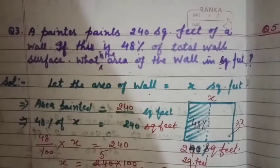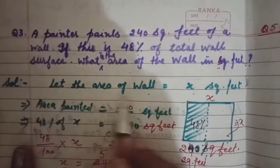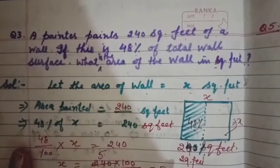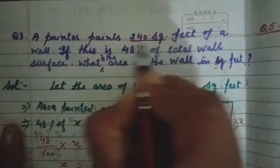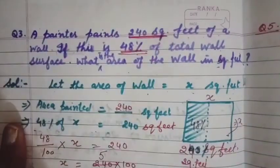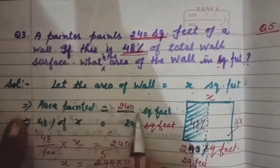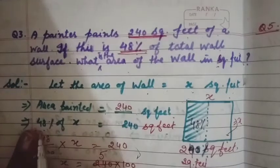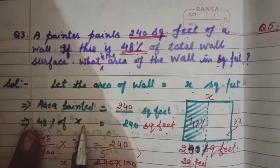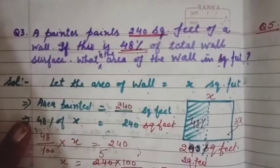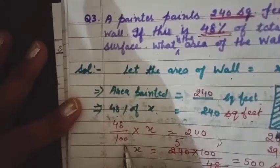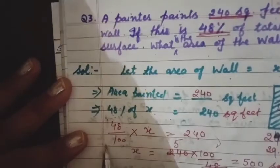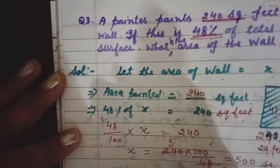Let the area of the wall be x square feet — हम wall का area x square feet मान लेते हैं। We have this information: 240 square feet painted area is 48% of total wall. So 48% of x = 240 square feet. Equation: 48/100 × x = 240. Now we have x to solve for — 48/100 is extra, we move it to the other side.